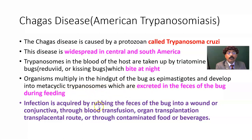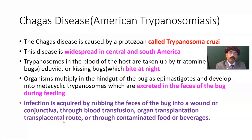Infection is acquired by rubbing the feces of the bug into a wound or conjunctiva, through blood transfusion, organ transplantation, or the transplacental route. It may be transmitted to the fetus, or through contaminated food or beverages.